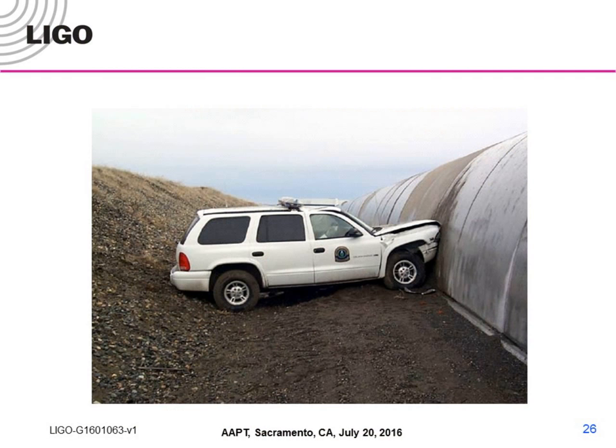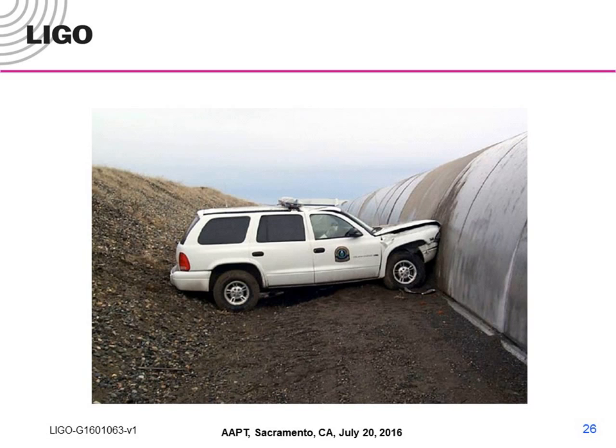The vacuum tubes are covered because nature — and humans — can be very nasty to them. We actually had a leak in one of these tubes about four years ago, and finding a leak in a vacuum system was painstaking work, but we were able to do it.